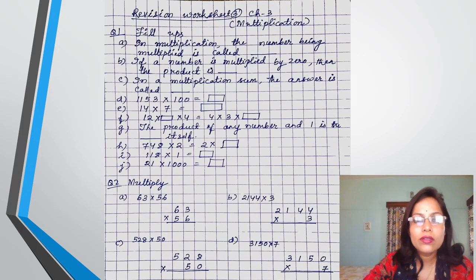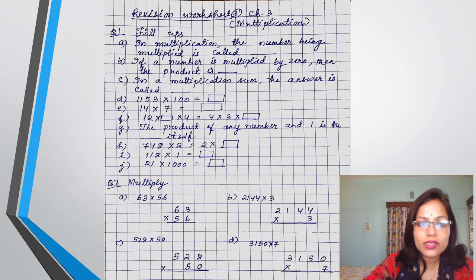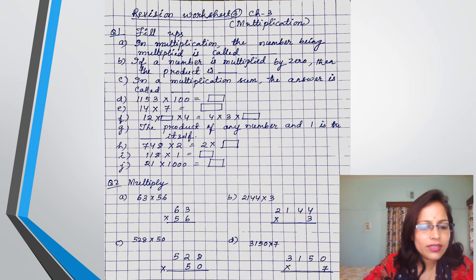Yes children, now see the third worksheet. That is from the multiplication chapter. In the multiplication chapter, you have known so many things. All the properties of multiplication, how to multiply by one digit and by two digit multiplier also.